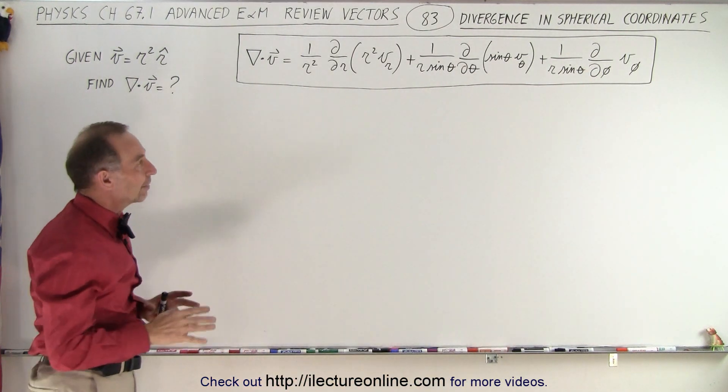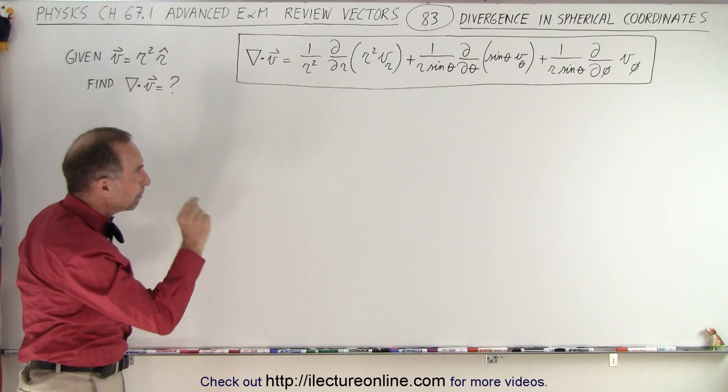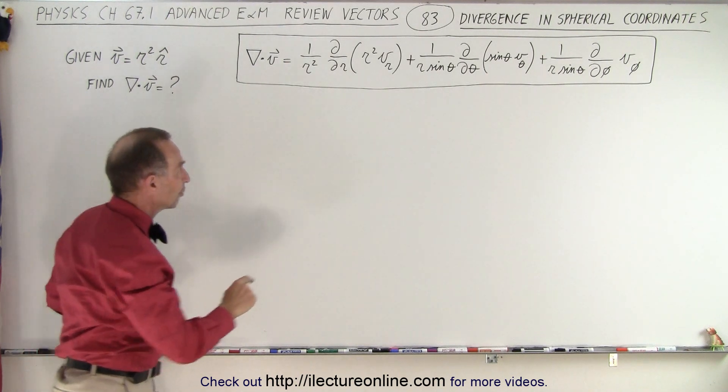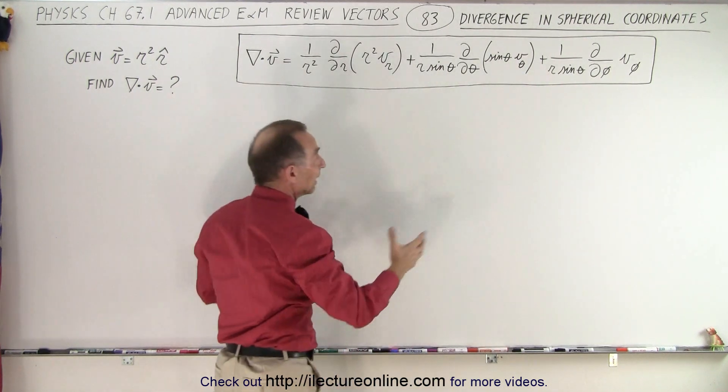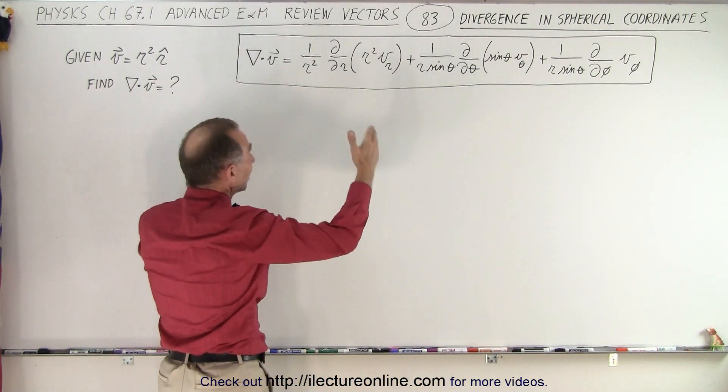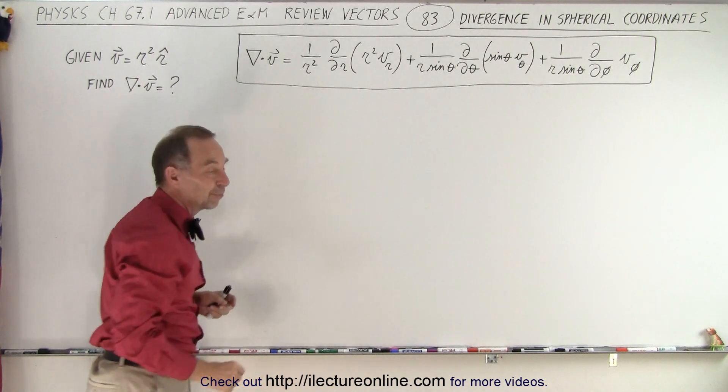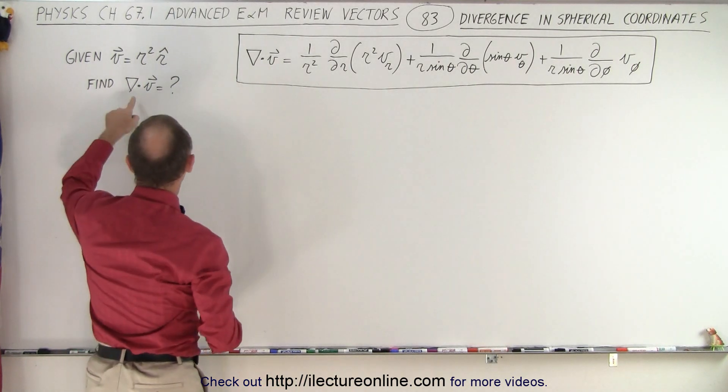So don't do that. First, multiply the component times what you have to multiply with. Here's an r². There's a sine of θ. There you don't have to multiply with anything. Take the partial derivative and then multiply it by what's in the front of that. So let's go ahead and try that with this particular example.